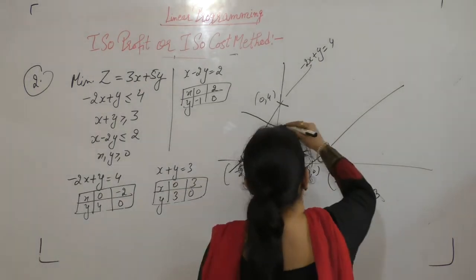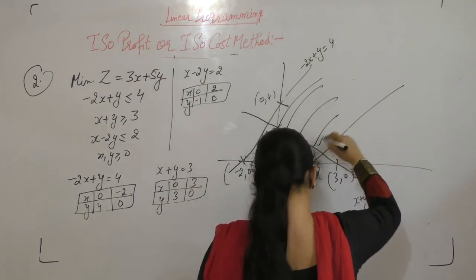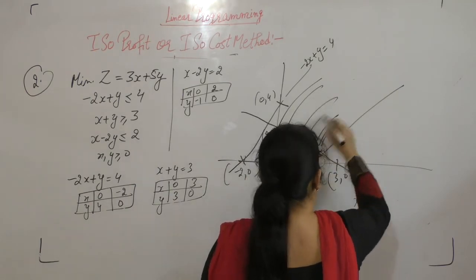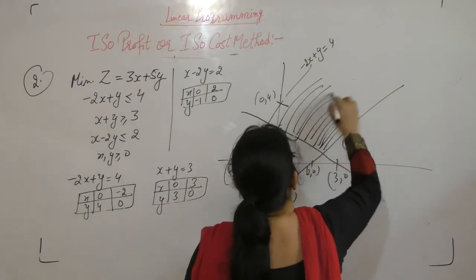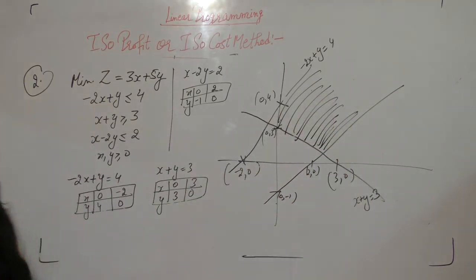Now this is the region. x is 0. Now I can plot it here.